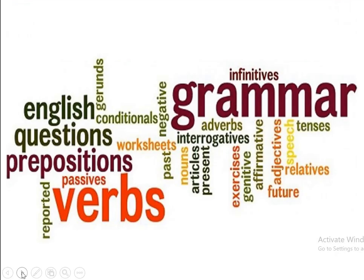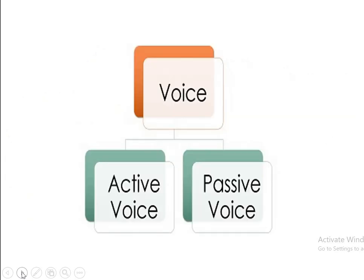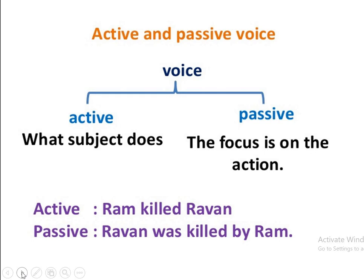In English grammar there are a lot of things like prepositions, gerunds, negatives, positives, interrogatives, adverbs. But today we are going to focus on voice change with reference to active voice and passive voice. Let us first try to understand what we mean by voice and what is active and passive voice. Voice can be active, where the subject does something and it is clearly stated in that way, and passive, where the focus is mainly on the action and not on the subject.